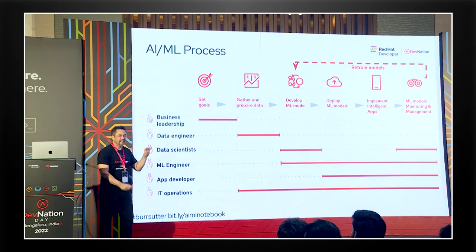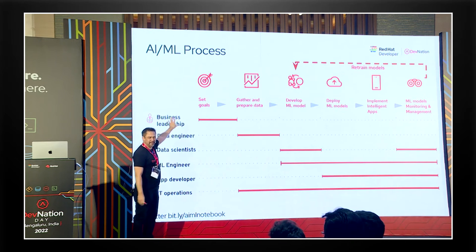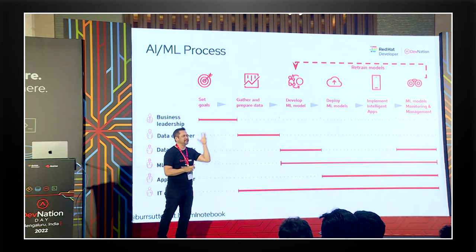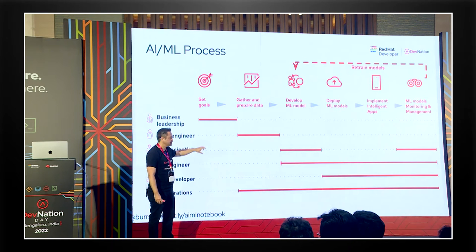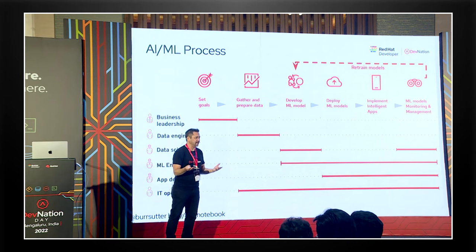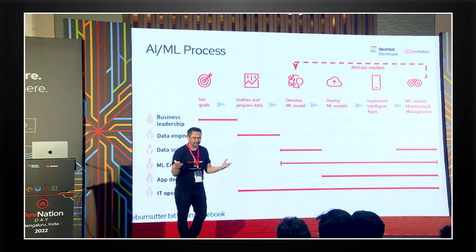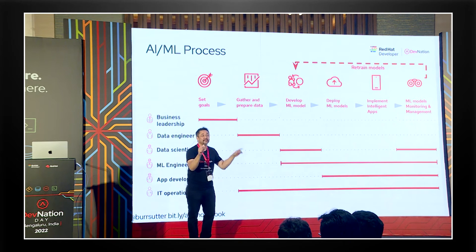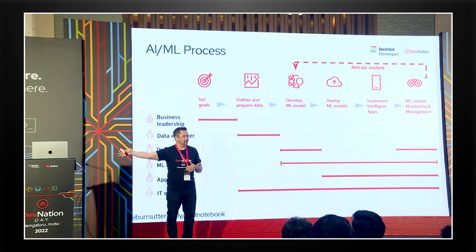Another important thing to understand: a model is trained on a chunk of data during a period of time. The business leadership sets the goal, the data engineer gathers the data - pulling from mainframes, databases, the data warehouse, the data lake. The data scientist then takes all that data, typically given a bunch of CSV files or data dumped to S3 or a big hard drive. They dig through it and figure out how to write their code to train their model. That data is a point in time - they're looking over the last six months of data, and that's a point in time because what happens six months from now when their data is six months old? That's another important thing: the model can drift.